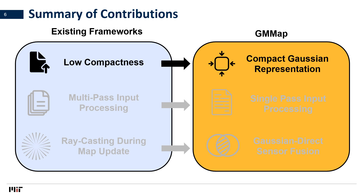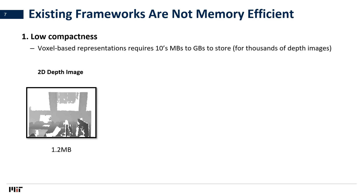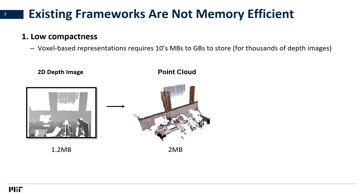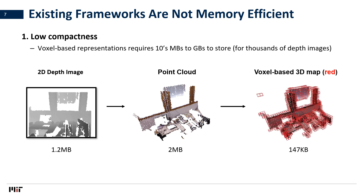First, we discuss why our Gaussian representation is more compact than prior representations. Consider an exploration experiment where the robot captures the 3D environment using multiple depth images. For simplicity, we consider a single depth image where pixels closer to the robot are darker in color. This image requires 1.2 megabytes to store, and can be projected into 3D as a list of points called a point cloud that consumes 2 megabytes. From the point cloud, most mapping frameworks downsample them into cubic cells called voxels, whose outlines are colored in red. Just for this single image, voxel-based representation requires 147 kilobytes to store.